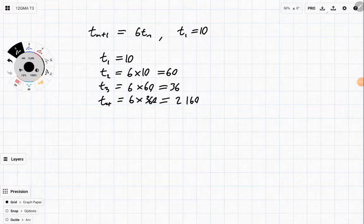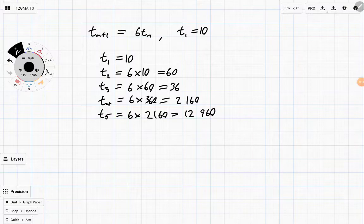And the fifth term is just going to be 6 times 2160, which is 12,960. So you can see with geometric sequences that they can grow a lot faster than arithmetic sequences. Let's have a look at another one.